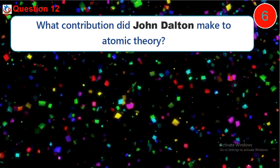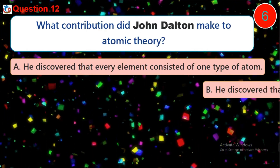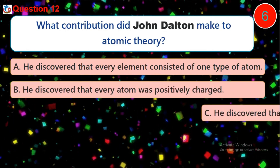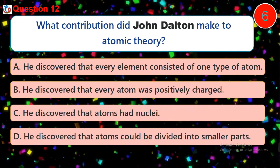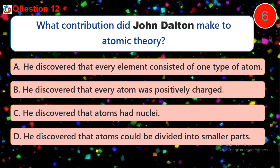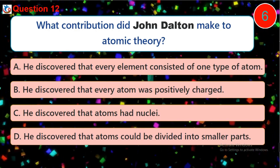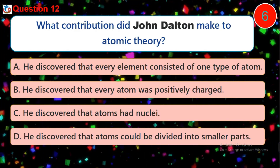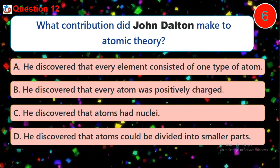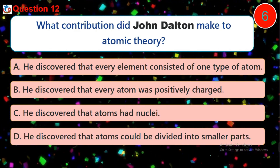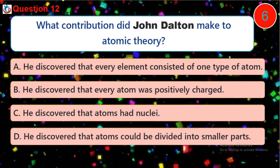Question 12. What contribution did John Dalton make to atomic theory? A. He discovered that every element consisted of one type of atom. B. He discovered that every atom was positively charged. C. He discovered that atoms have nuclei. D. He discovered that atoms could be divided into smaller parts.